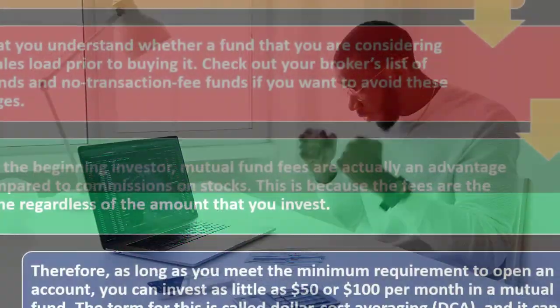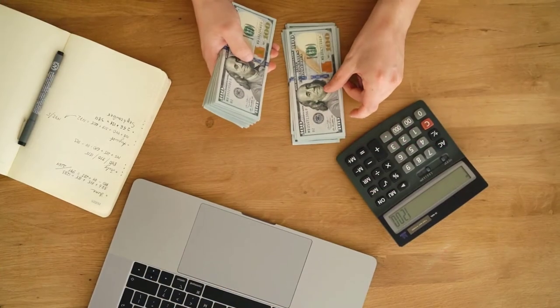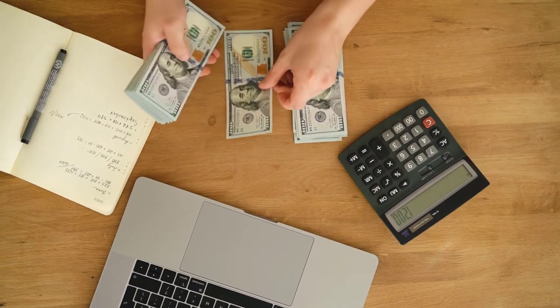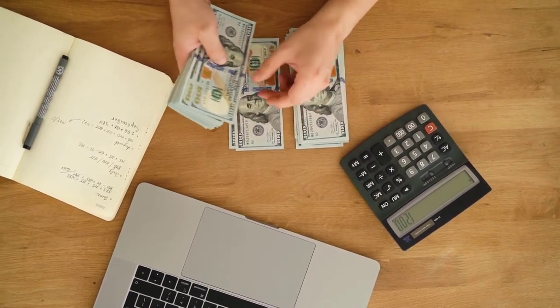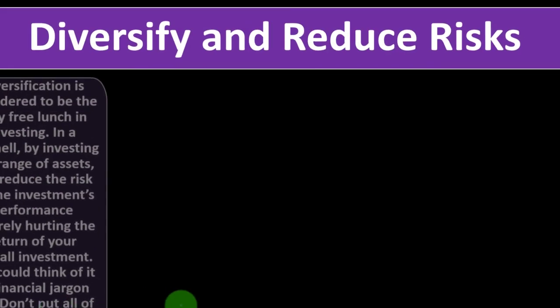As long as you meet the minimum requirement to open an account, you can invest as little as fifty or one hundred dollars per month in a mutual fund, adding money in small increments once you've built up the initial base. This approach is called dollar cost averaging (DCA), and it can be a great way to start investing.